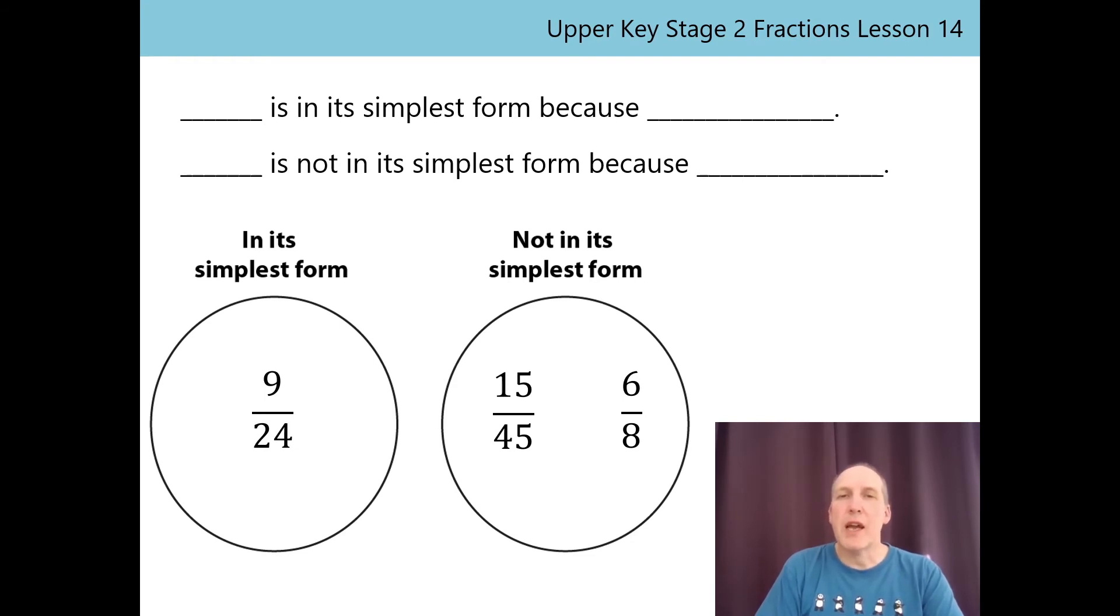I'll start with the fractions which I think are in the right places. 15/45 is not in its simplest form because 15 is a common factor of the numerator and denominator. 6/8 is not in its simplest form because 2 is a common factor of the numerator and denominator. So 9/24 is the one that's in the wrong place. 9/24 is not in its simplest form because 3 is a common factor of the numerator and denominator. Both 9 and 24 are in the three times table. So let's move it to its correct place.